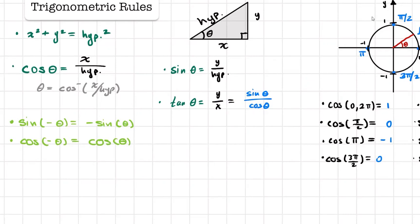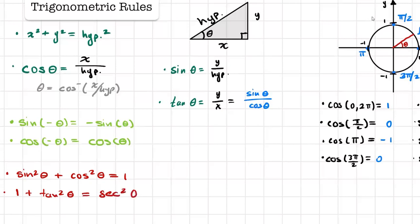Let's not forget our Pythagorean identities: sine squared of theta plus cosine squared of theta equals one — the one we always know. We also have one plus tangent squared of theta equals secant squared of theta, and then one plus cotangent squared of theta equals cosecant squared of theta. These are some of the key identities we have.